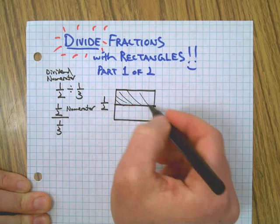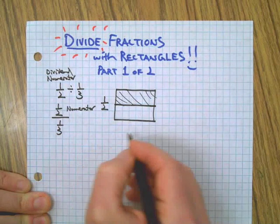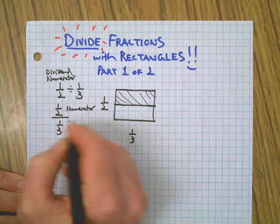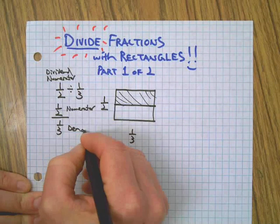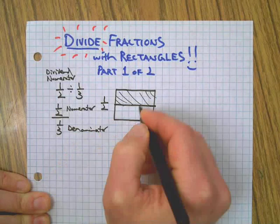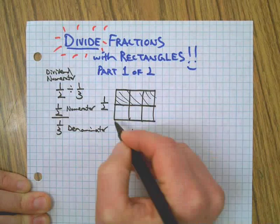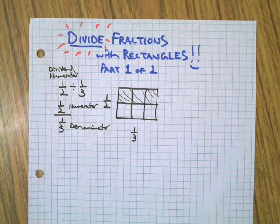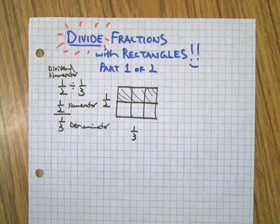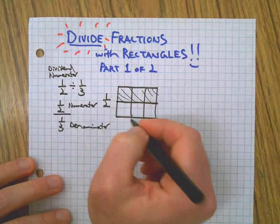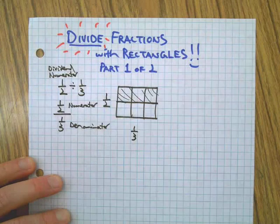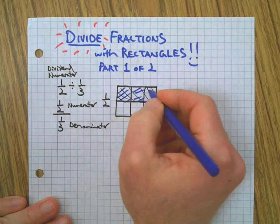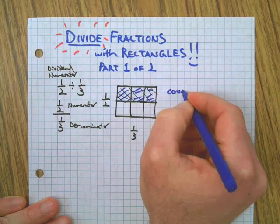We're going to label this side and create that fraction there. We can shade that in. Then you can imagine we're going to take the denominator or the divisor and put it over here, create that split in the rectangle. Then we're going to count these pieces.